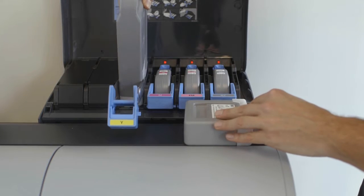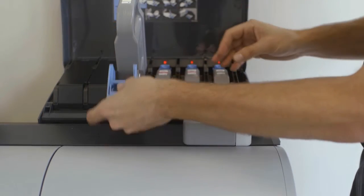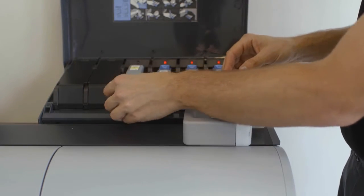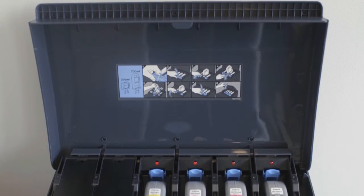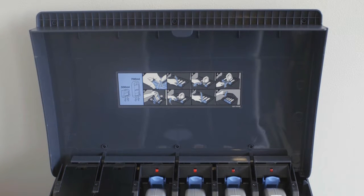Insert the new tank, moving the blue lever to the closed position. This indicator light will stop flashing when the new tank is installed correctly. Inside the ink tank cover, you will notice a diagram that describes this procedure.